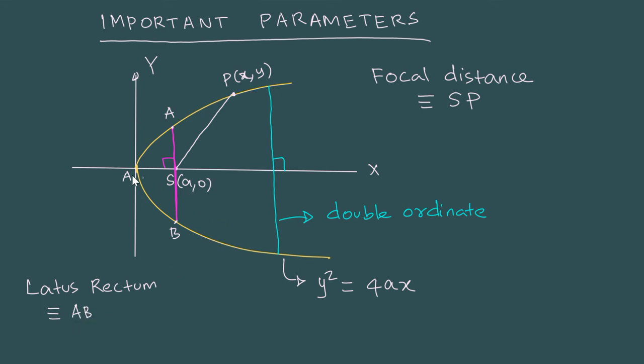Now, it is very easy to get this distance AB. If I take x as a, because these points A and B have x-coordinates equal to a, then we have y² = 4a². That means y is plus or minus 2a.